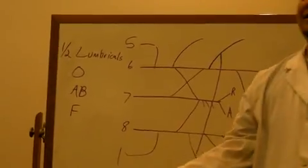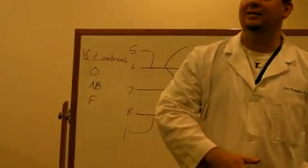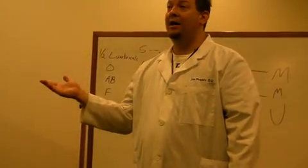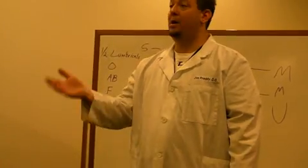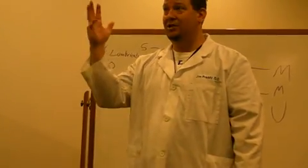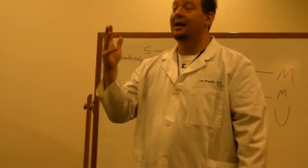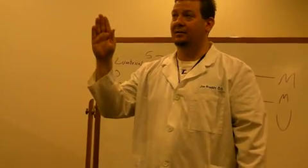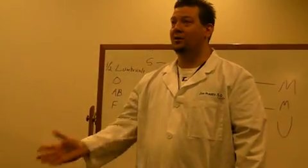But that's how you remember that's median. So everything else, the dorsal interossei muscles, the palmar interossei muscles, the hypothenar eminence, which is the other one-half loaf - lumbricals, opponens, abductor, and flexor digiti minimi - and the adductor pollicis, all of those muscles are ulnar.